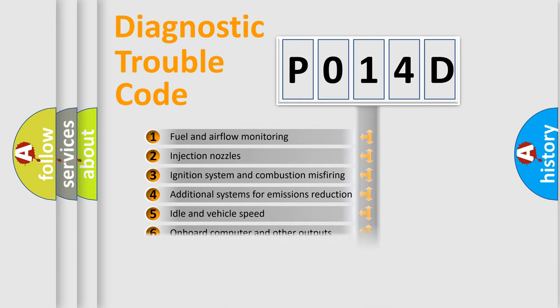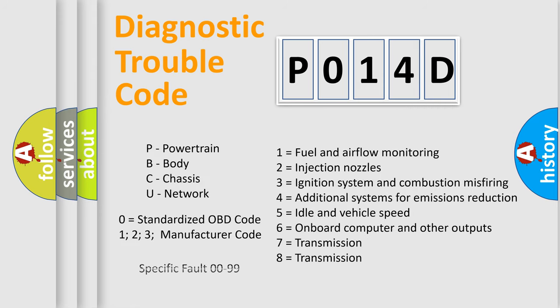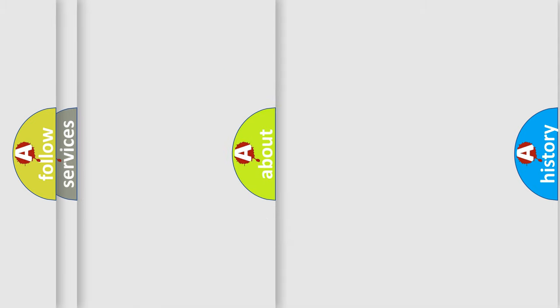The third character specifies a subset of errors. The distribution shown is valid only for the standardized DTC code. Let's not forget that such a division is valid only if the second character code is expressed by the number zero.